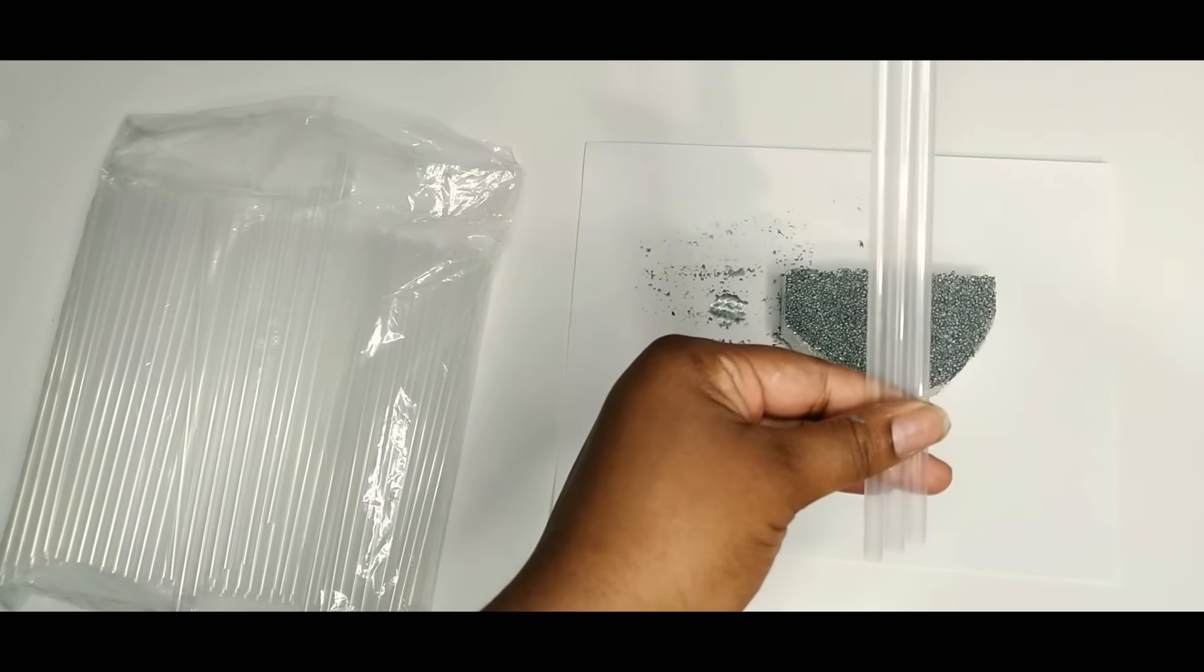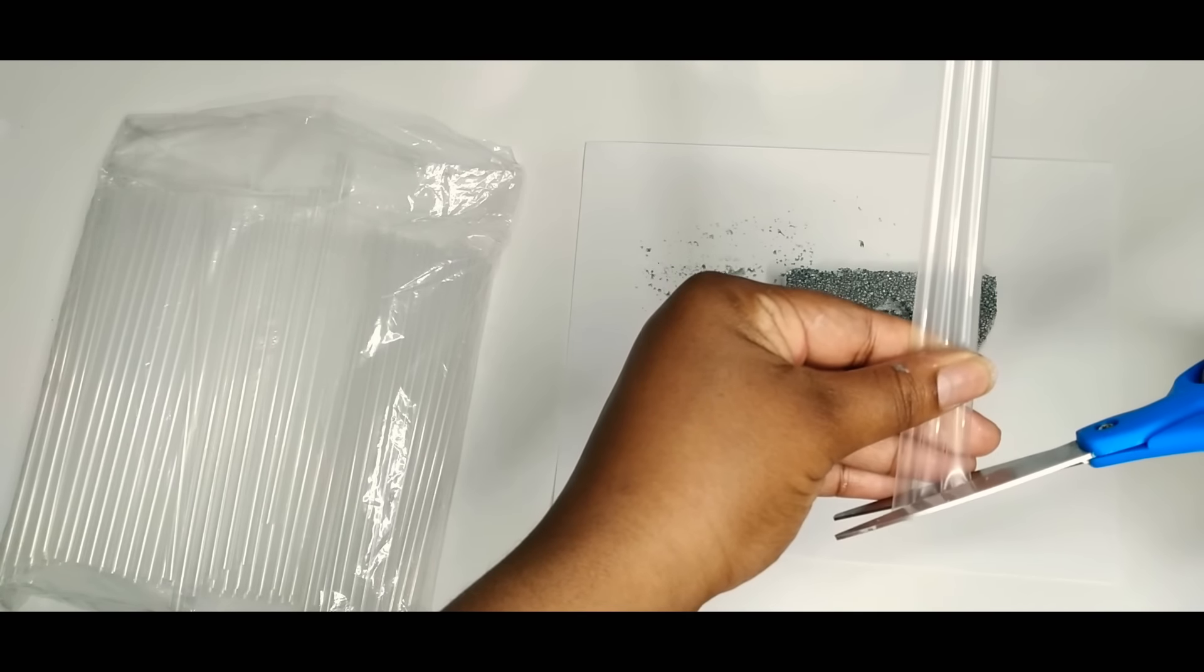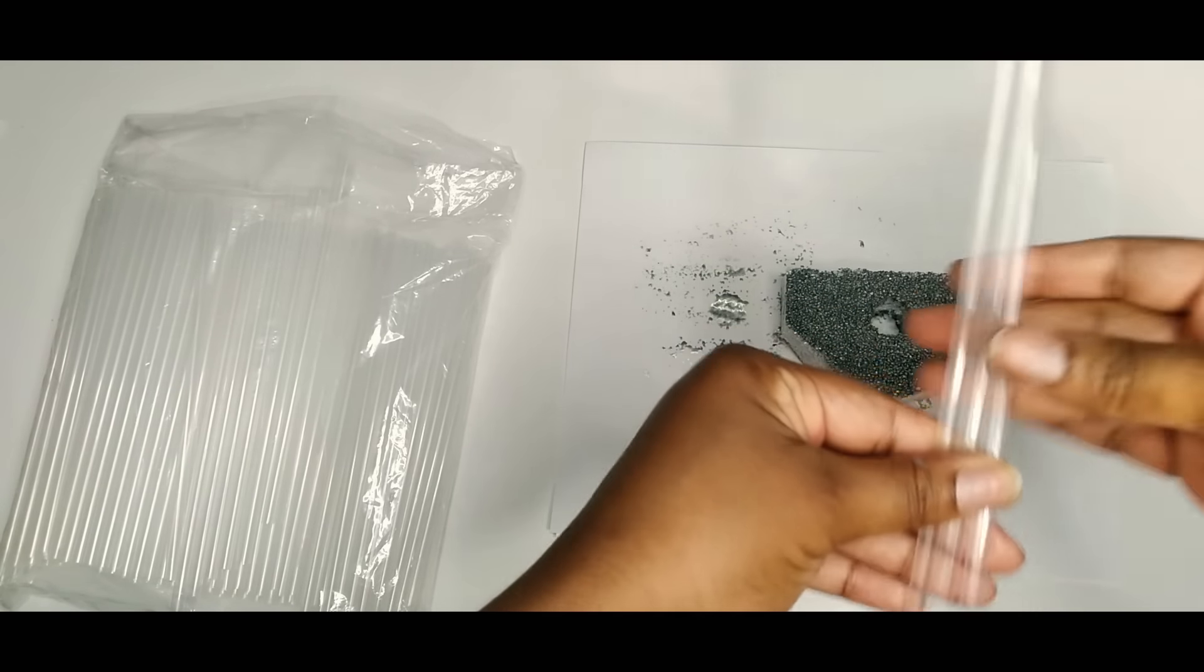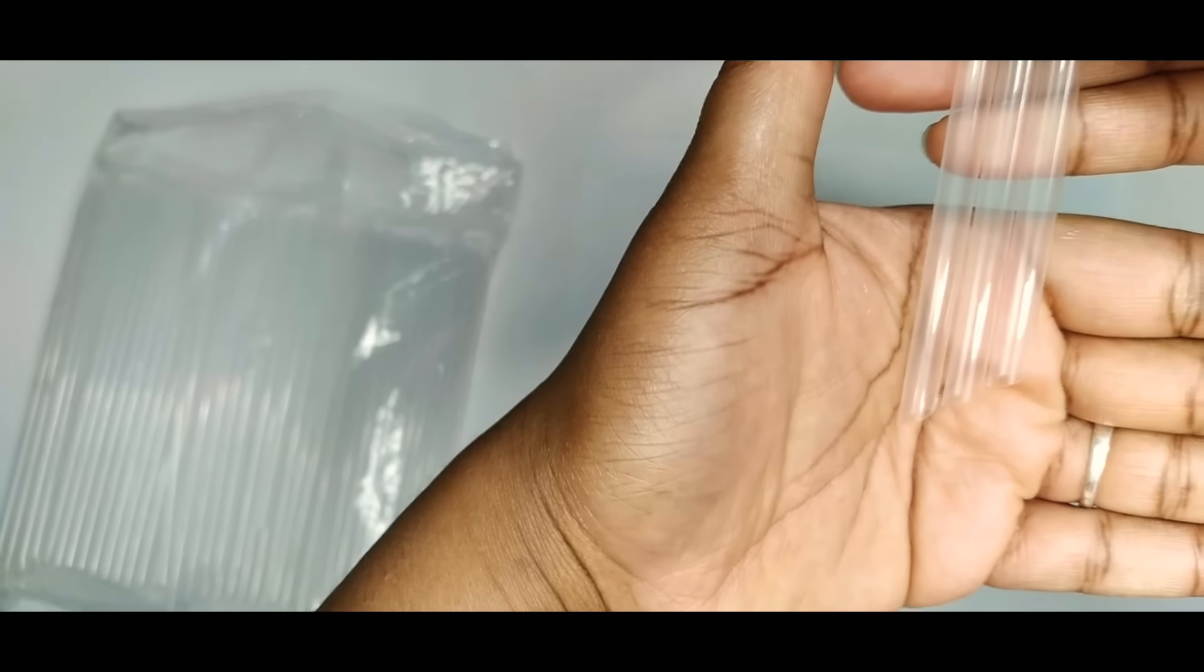Now going in, I'm taking my straws and cutting them at an angle. I'm doing this for two reasons. One, I'm doing this because it'll help me pierce my foam better. And two, because it'll allow my straws to sit at an angle.